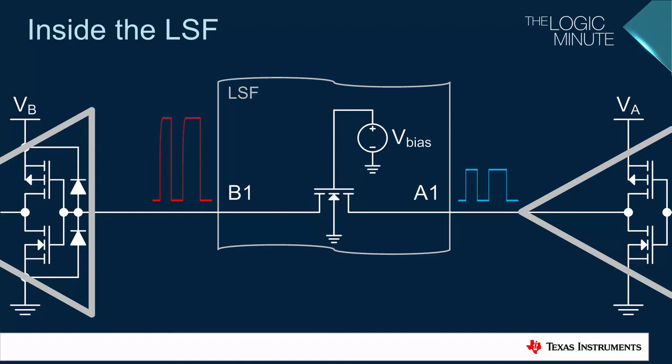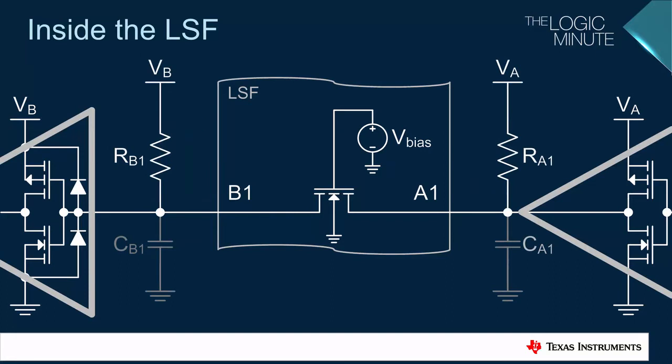Before we get into how the translation works, we need to add a few more components to this circuit. A pull-up resistor was added on both sides of the device. Each line also has a parasitic capacitance associated with it, labeled here as CA1 and CB1. This capacitance comes from the trace and attached devices. The parasitic capacitors are shown here grayed out as a reminder that they are not real components.